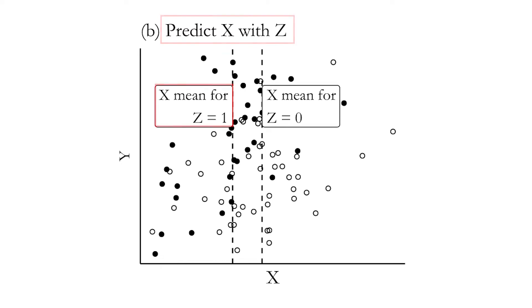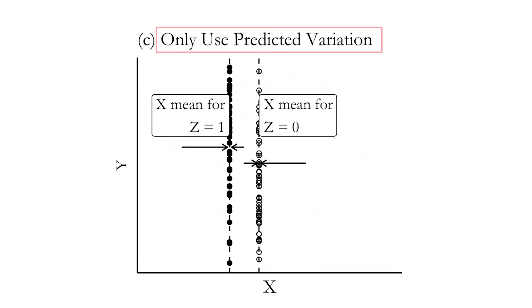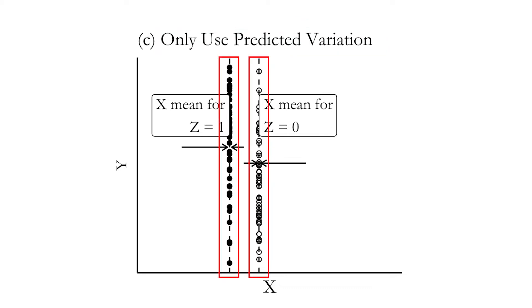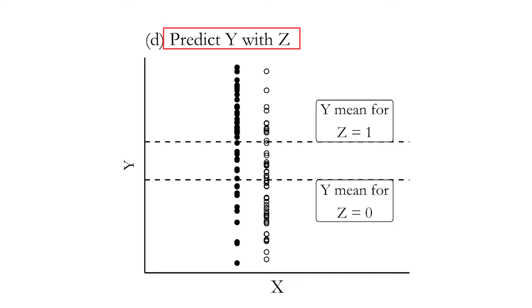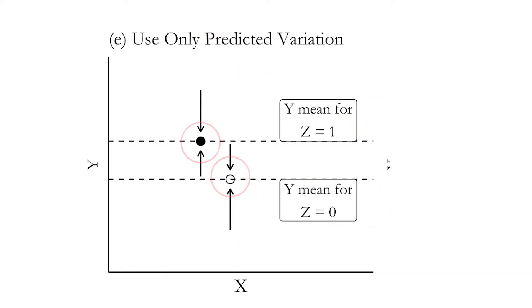So what do we do to get our instrumental variables estimate? First, we do the same thing as with a control variable: we predict X using Z. We get the average X for Z equals one and the average X for Z equals zero, giving us two different predictions for the two parts of the data. Then, unlike with a control variable, we only use the predicted variation — we subtract out everything we didn't just predict. All that variation in the data collapses down to just what we would predict with Z. Then we do the exact same thing with Y: we see what part of Y we can predict with Z, getting the average Y for Z equals one and the average Y for Z equals zero, and collapse everything down to just those two points.